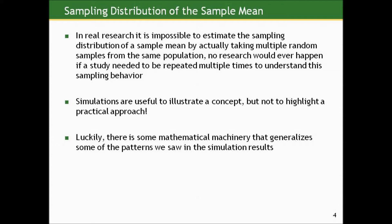In real research, however, it's impossible to estimate the sampling distribution of the sample mean by actually taking multiple random samples from the same population. No research would ever happen if we needed to do 500 studies every time we wanted to understand the sampling behavior. All you're ever going to end up doing in research is taking one sample.